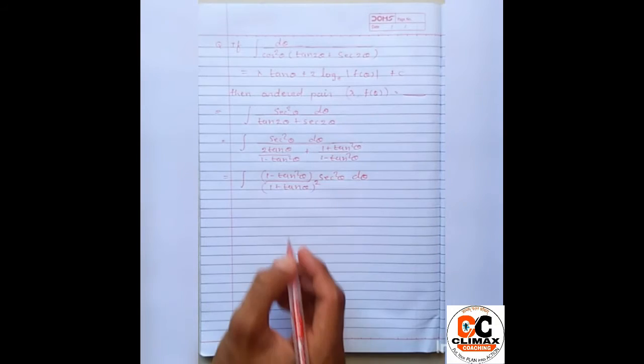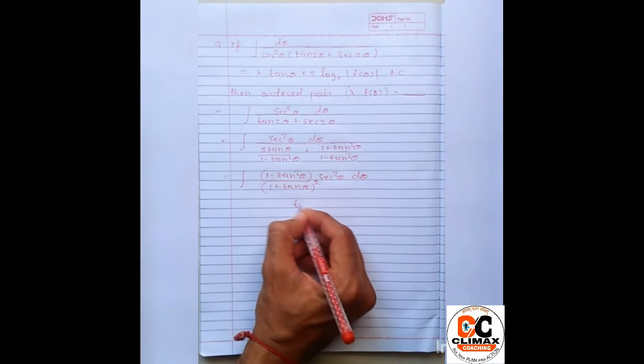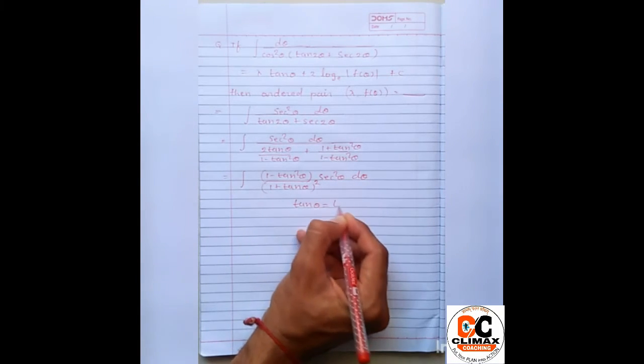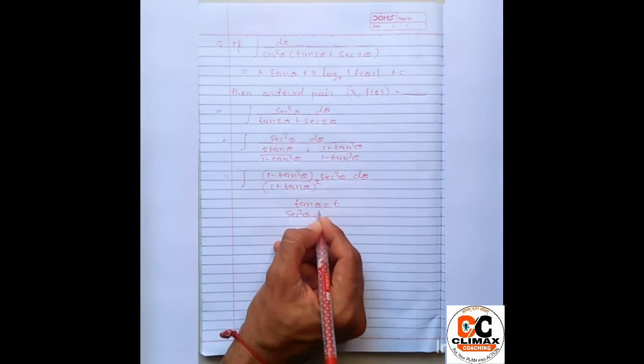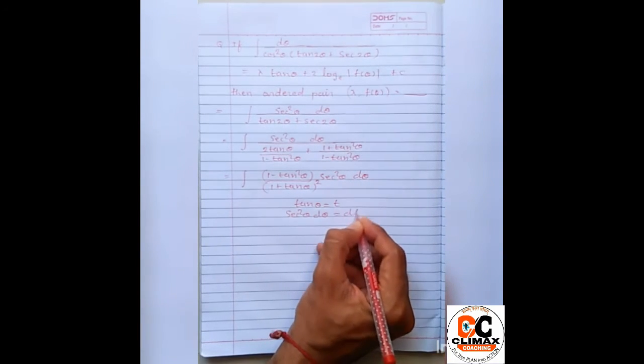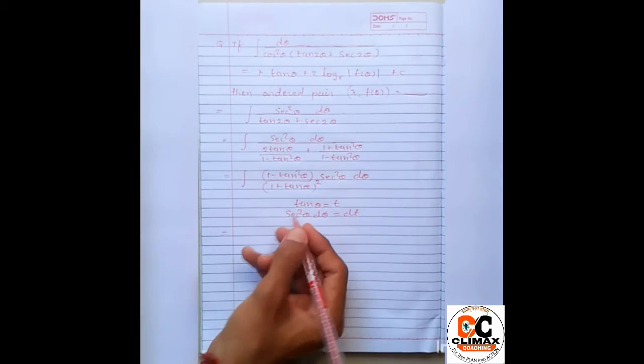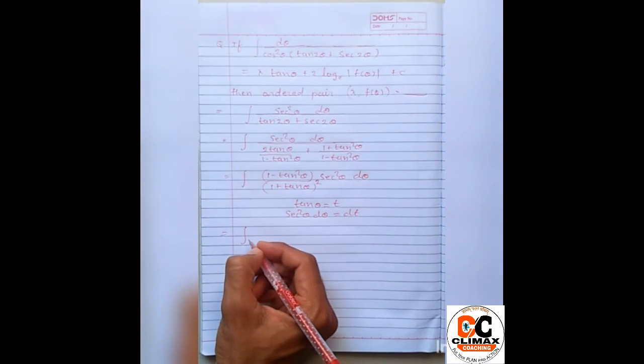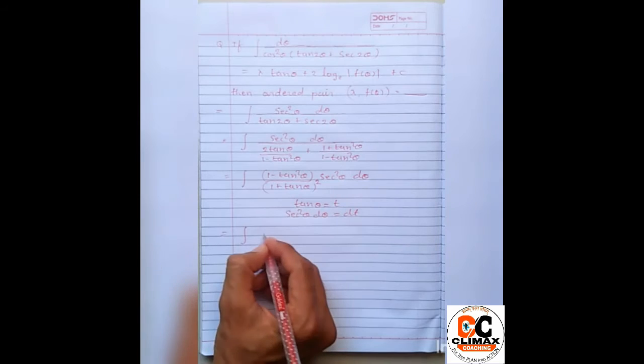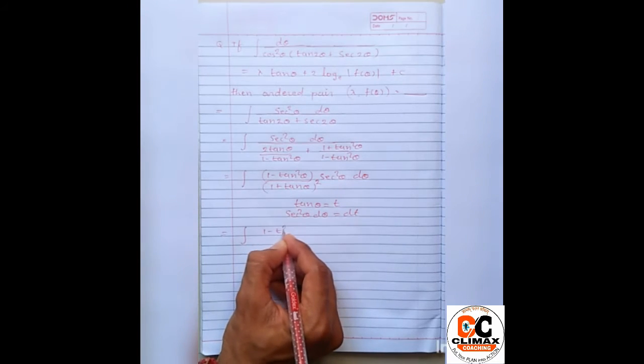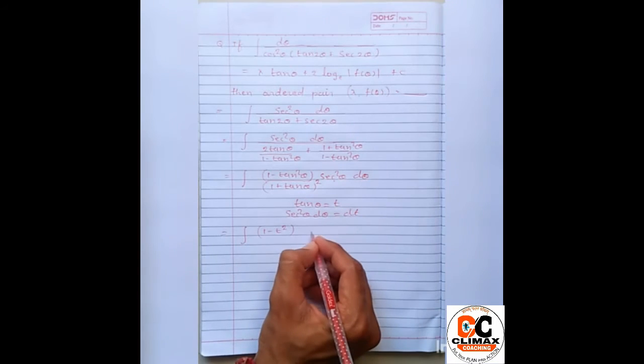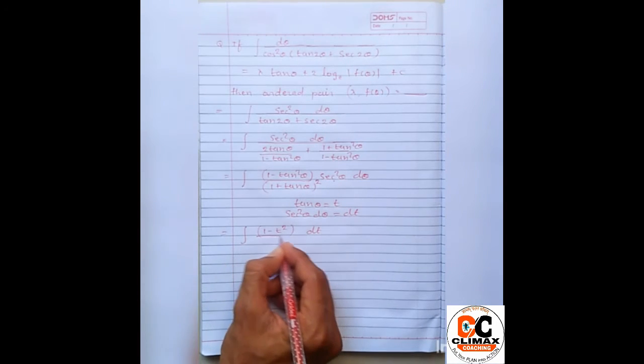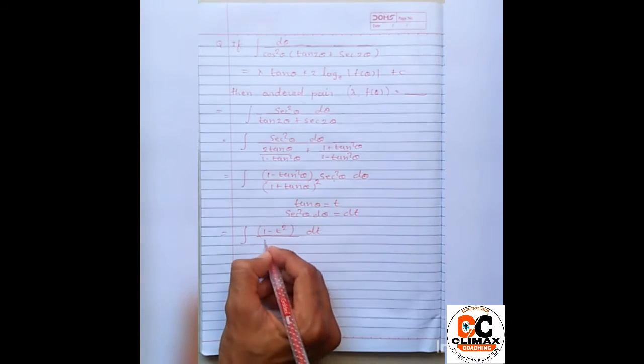Now if we take tan theta equal to T here and differentiate on both sides then sec square theta d theta equal to dt. Now substitute the value in the above step so we will get 1 minus T square into dt divide by 1 plus T whole square.